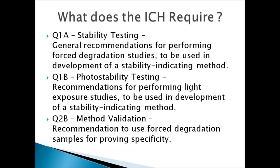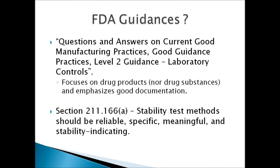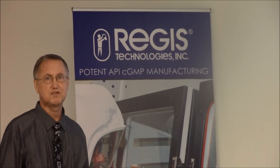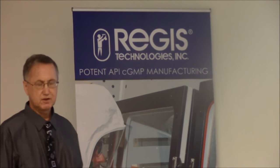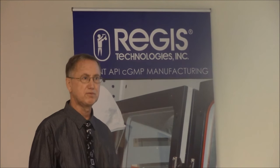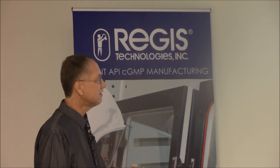Regarding ICH guidelines: Q1A talks about stability testing with a general recommendation for performing forced degradation studies to develop a stability-indicating method — a very important concept, but it doesn't detail the procedure. Photostability testing is described in Q1B, which has a fair amount of detail but is limited in scope to light exposure only. Method validation guidance includes a recommendation to use forced degradation samples for proving specificity. From FDA guidances, what I found was mainly a question-and-answer paper. The industry seems to have found a common set of ways to go about degrading samples, and there's a lot of commonality across vendors and academic references.